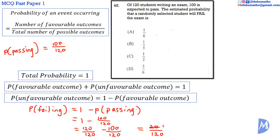120 minus 100 is equal to 20 over 120. Simplifying, the answer is 1 sixth. The answer is A.